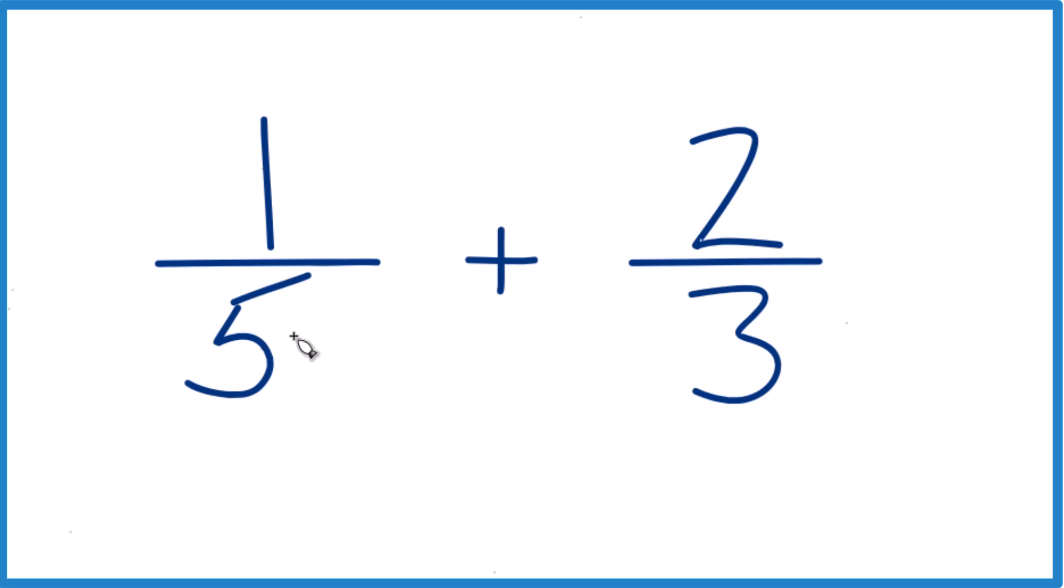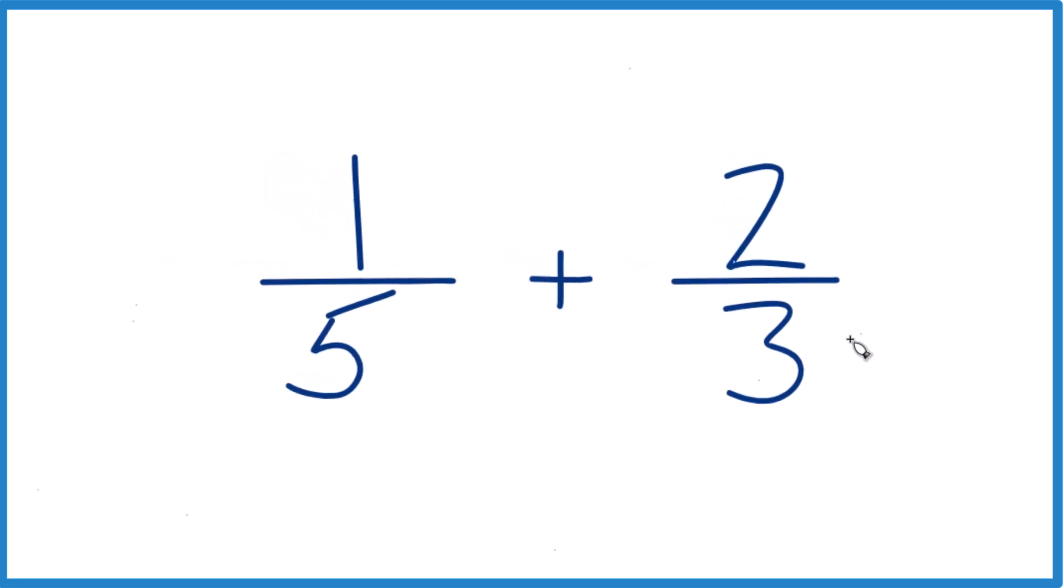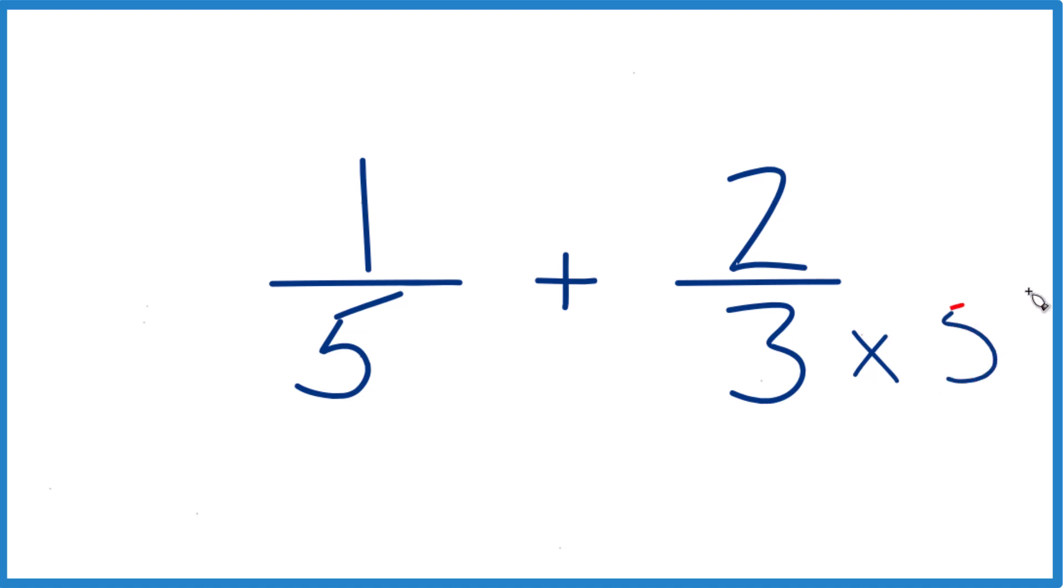So why don't we do this? Five times three, that would be 15, and three times five over here, that would be 15. So five times three, three times five, we have 15.